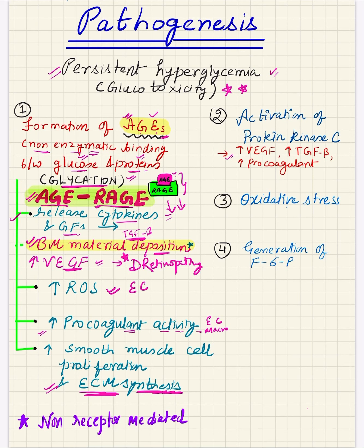Besides receptor-mediated effects, there are also non-receptor mediated effects of advanced glycation end products. They cause cross-linking between molecules of type 1 collagen. The problem with this cross-linking is that collagen becomes resistant to proteolysis — it cannot be broken down — causing accumulation of various proteins.